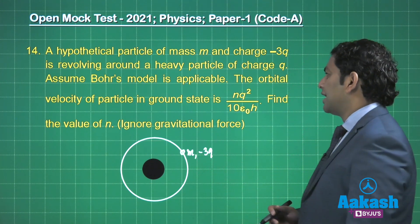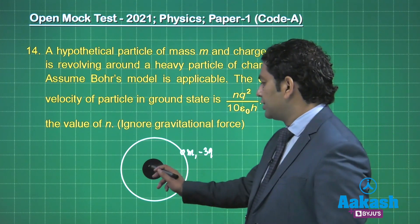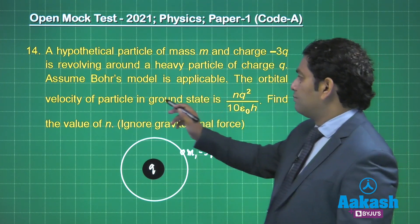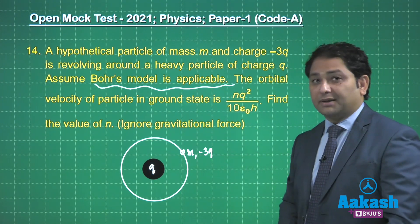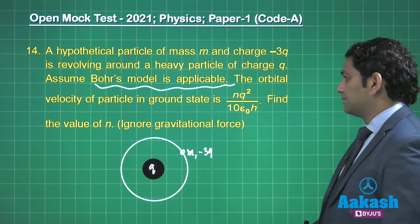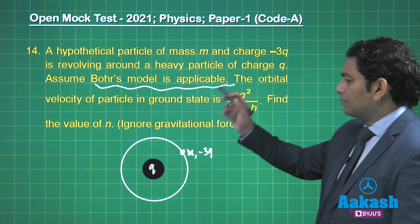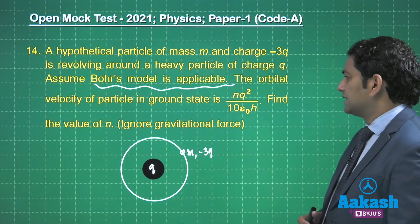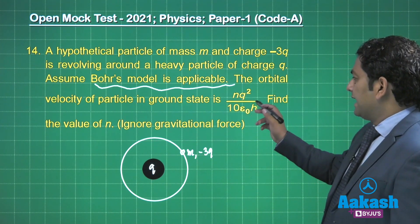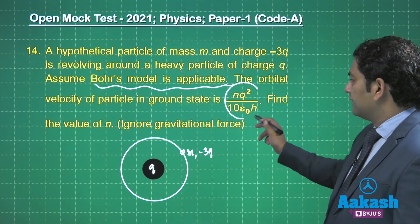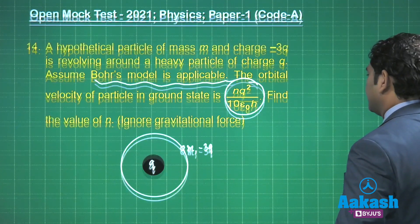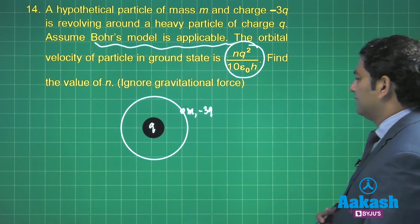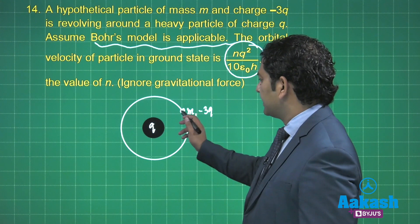As per the question, a hypothetical particle of mass m and charge -3q is revolving around a heavy particle of charge q. Assume Bohr's model is applicable - that means the quantization principle. You need to calculate the orbital velocity of the particle and compare with this, then comment on the value of n.